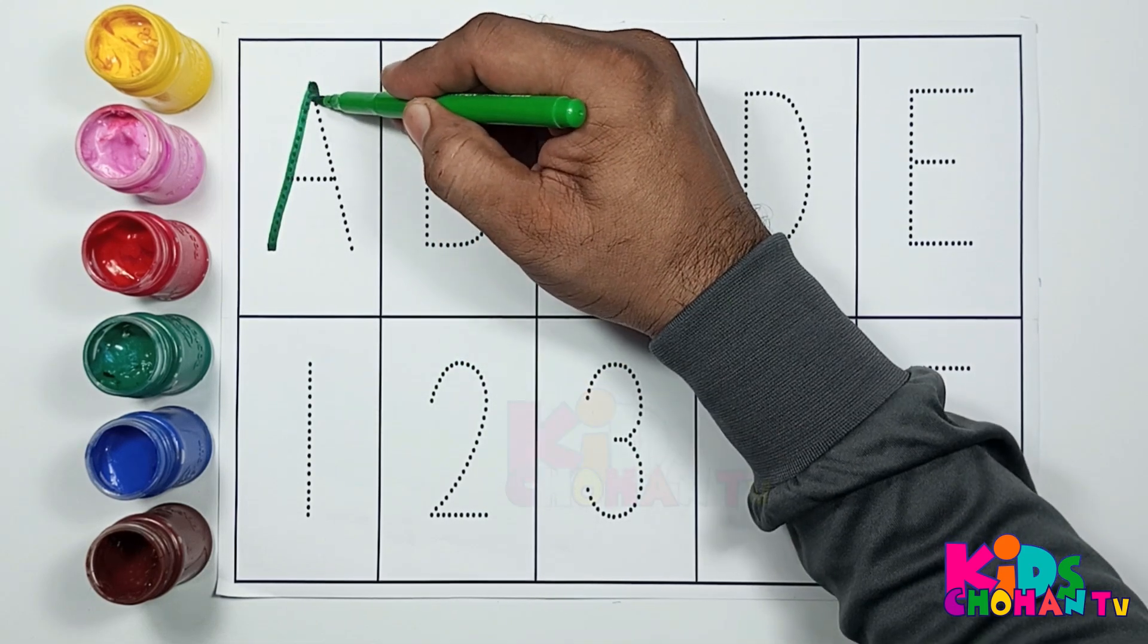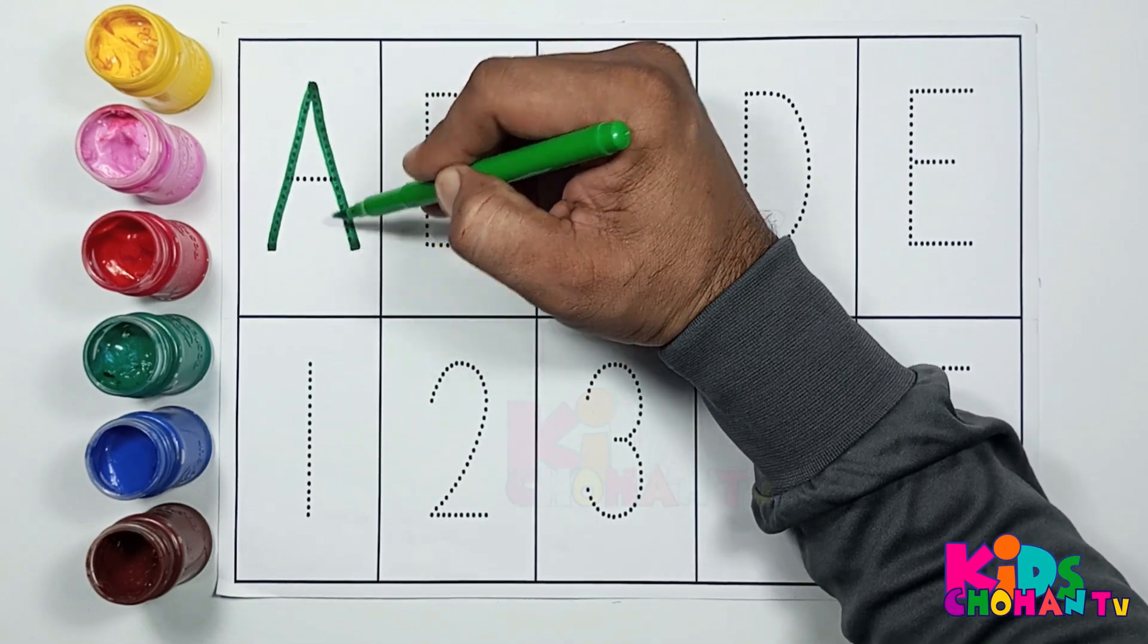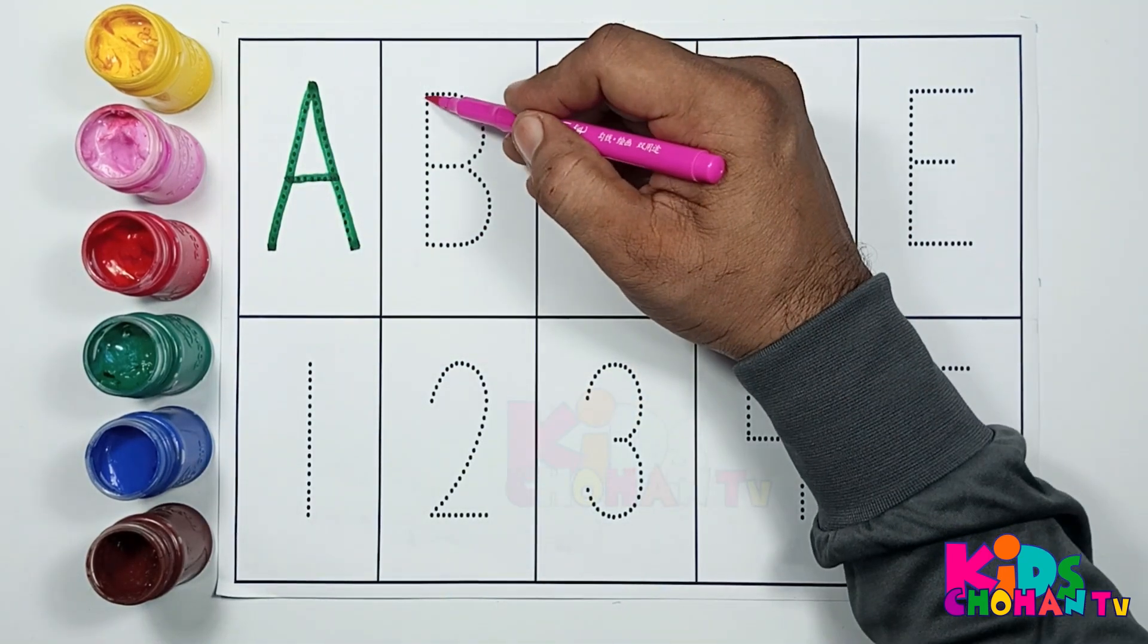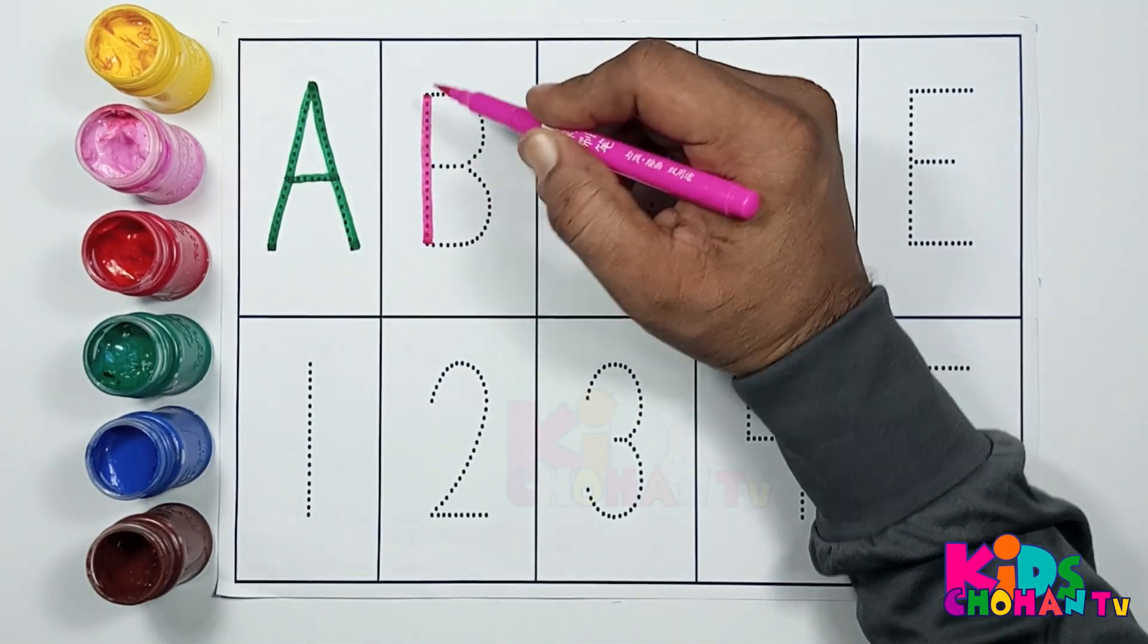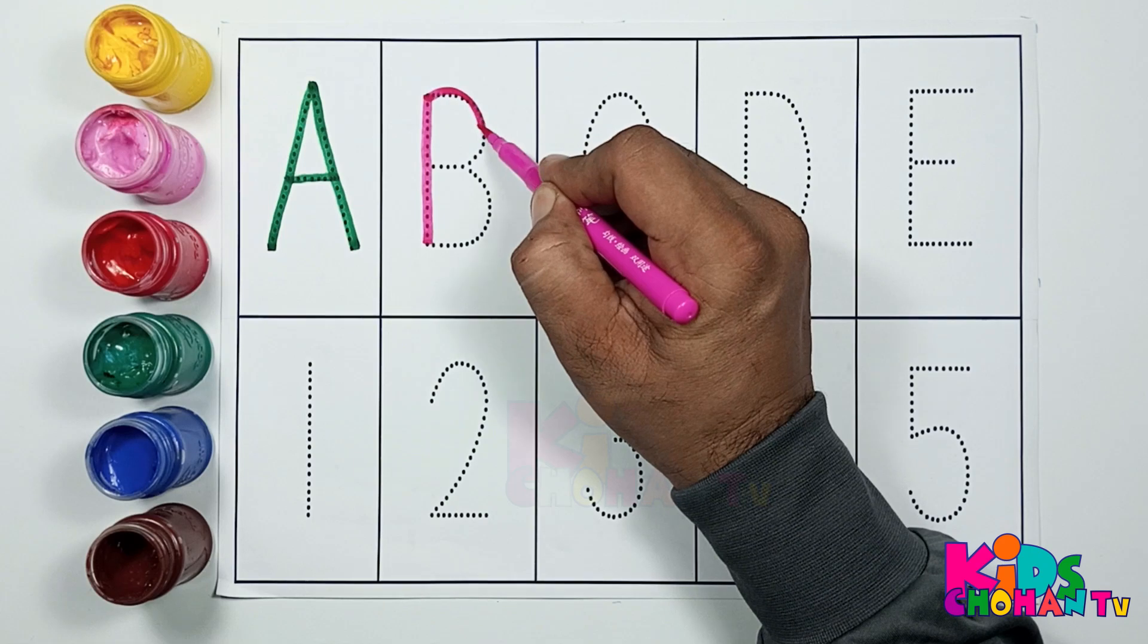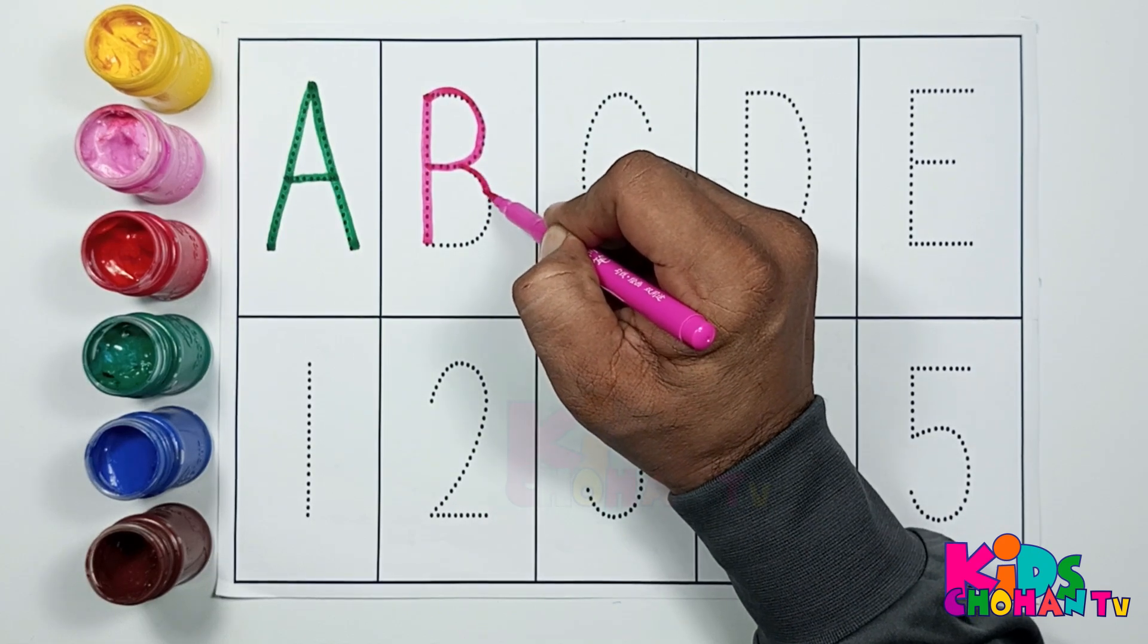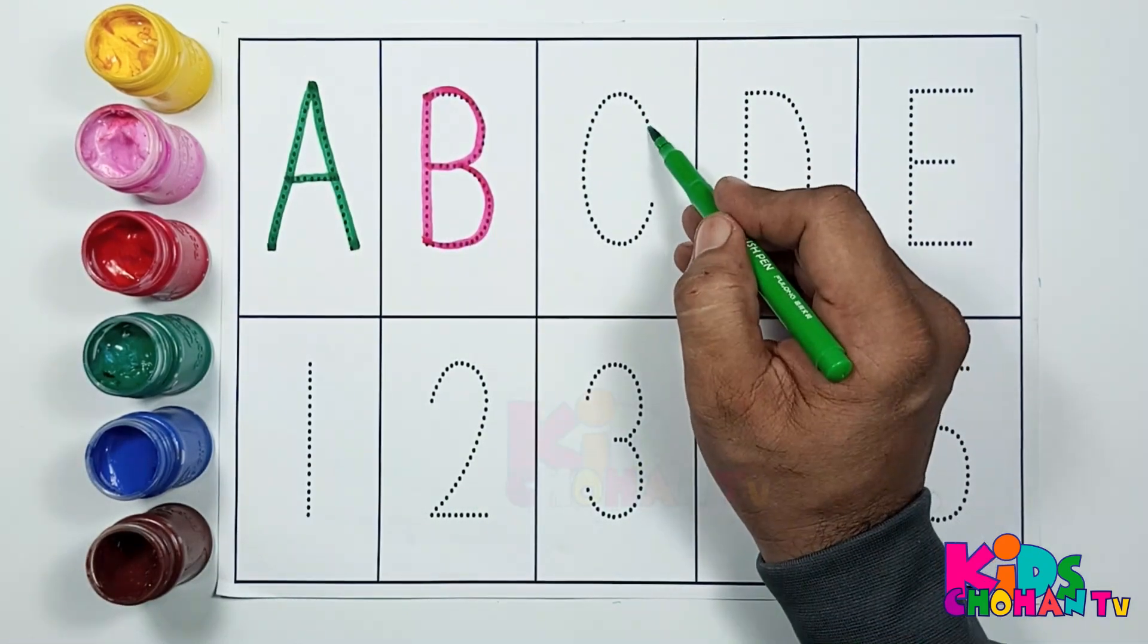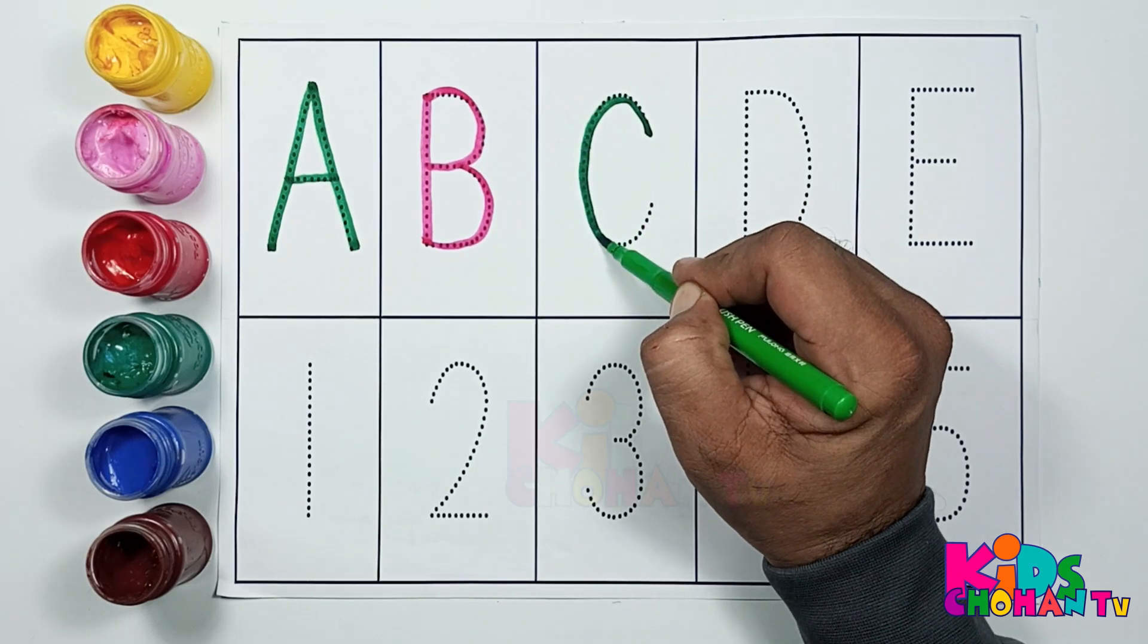A for apple. A. A for alligator. B. B for ball. B. B for bat. C. C for cat. C. C for car.